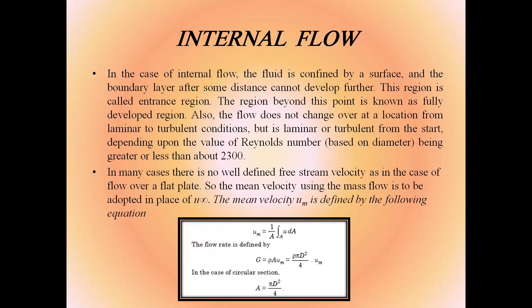In internal flow, the fluid is confined by a surface and the boundary layer cannot develop freely beyond some distance — this is the entrance region. Beyond it is the fully developed region. Flow does not change from laminar to turbulent mid-stream, but is laminar or turbulent from the start depending on whether Reynolds number based on diameter is greater or less than 2300. Mean velocity Um is defined as: Um = (1/A) × ∫U dA. Flow rate = ρ × A × Um = ρ × (πd²/4) × Um.